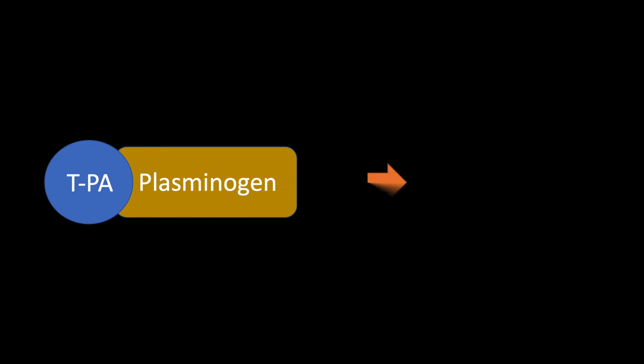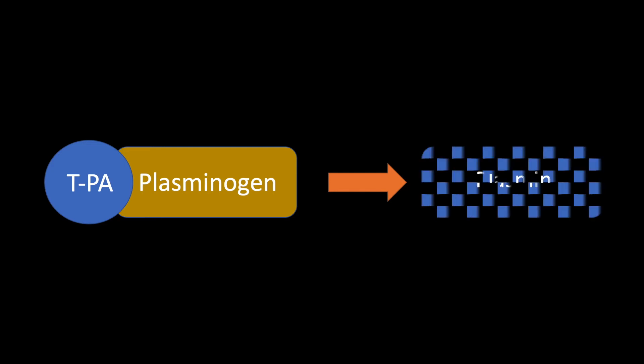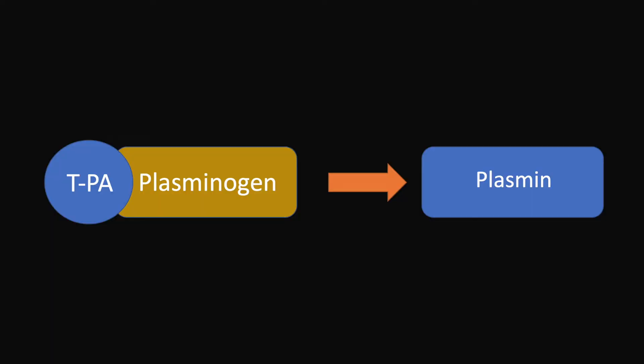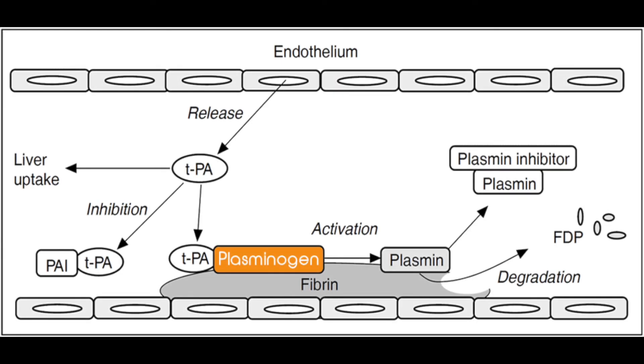Endothelial injury results in the release of TPA, or tissue plasminogen activator. TPA will then transform plasminogen into plasmin, the active form. Plasmin will then remove the fibrin clots, as well as break down fibrin to make fibrin degradation products, which are also strongly chemotactic for neutrophils.